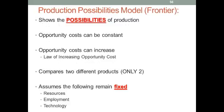The production possibilities model, or frontier as it's sometimes called, shows the possibilities of production — not necessarily what should be produced and how it should be produced, but what is possible in an economy given the resources available. Opportunity costs can be constant or they can increase. When they increase, the law of increasing opportunity cost is applied.